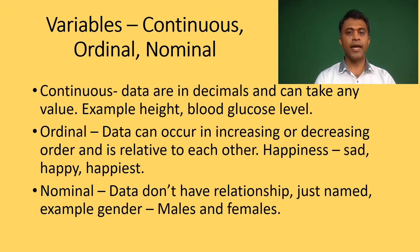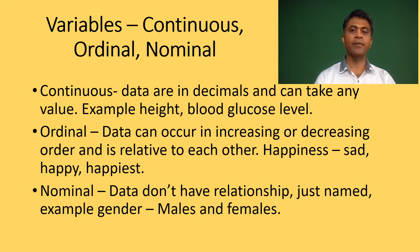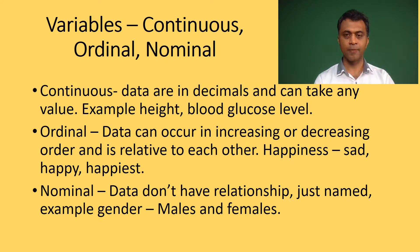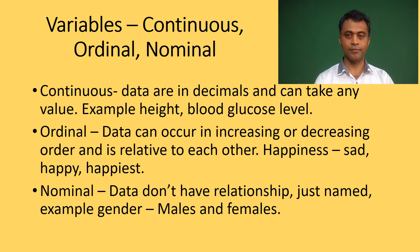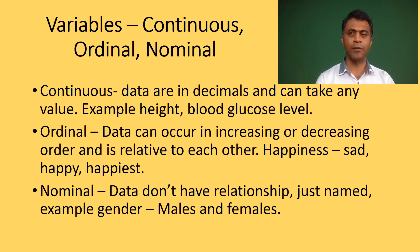Ordinal data can occur in increasing or decreasing order and is relative to each other. For example, happiness can be measured but not quantified exactly; it can be expressed as three levels — sad (the lowest), happy, and happiest. Happy is greater than sad, but a precise mathematical relationship cannot be made between them apart from their relative greater or lower status. Nominal data have no mathematical relationship; they are just naming. For example, gender — males and females — has no mathematical relationship between the categories.